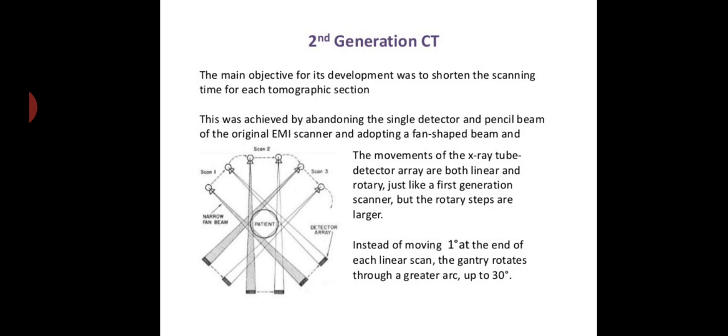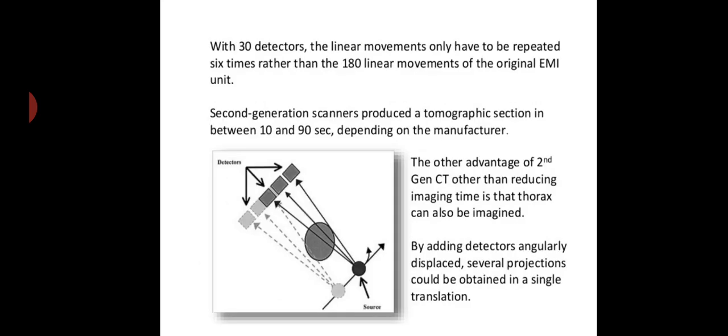In first generation CT, the pencil beam and single detector was used, whereas in the second generation CT, a fan beam and multiple detectors are used. Like first generation scanner, the movement of the second generation CT was translate-rotate, that is linear and rotatory motions. But instead of moving one degree at the end of each linear scan, the gantry rotates through a greater arc up to 30 degrees, thus reducing the scan time. With 30 detectors, the linear movements only have to be repeated 6 times rather than 180 linear movements of the original EMI unit. Second generation scanners produce a tomographic section in between 10 and 90 seconds depending on the manufacturer.